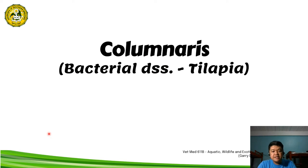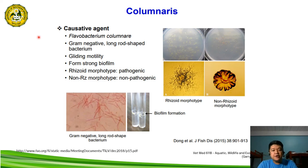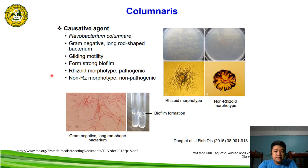The next bacterial disease of tilapia is columnaris. The causative agent is Flavobacterium columnare — a gram-negative, long-rod-shaped bacterium. It exhibits gliding motility, forms strong biofilm, and has two morphotypes: the rhizoid morphotype, which is pathogenic, and the non-rhizoid morphotype, which is non-pathogenic.